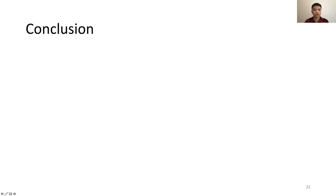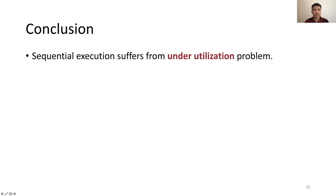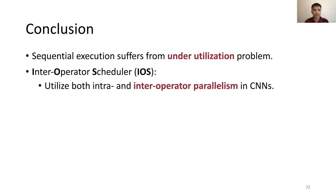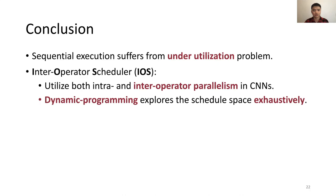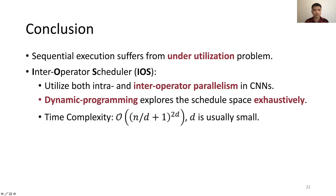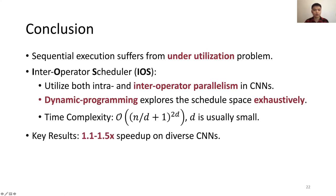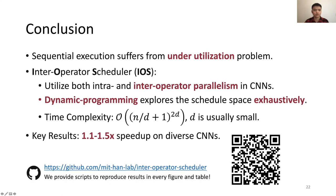In conclusion, we found that sequential execution suffers from underutilization, especially for small operators on powerful GPUs. We propose the Interoperator Scheduler to utilize both intra- and interoperator parallelism. We employ dynamic programming to explore the schedule space exhaustively, and prove the time complexity is only exponential in the width of the computation graph, which is usually small, making exhaustive exploration practical. iOS achieves 1.1 to 1.5 times speedup over state-of-the-art libraries. We have open sourced our code — welcome to check it out.